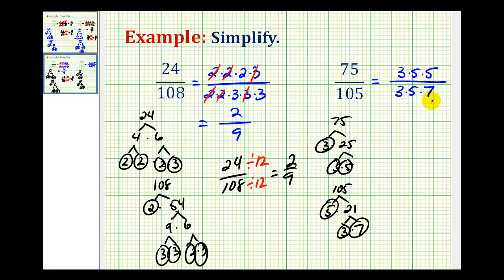And now for the fun part, we get to simplify. Here's a three over three. That simplifies to one. Five over five simplifies to one. So 75 over 105 simplifies to five-sevenths.